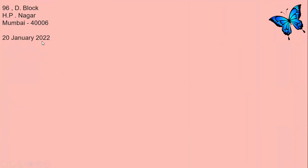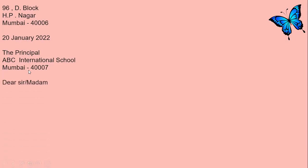The date is 20 January 2022. If you write 'January 20,' then you need a comma before 2022 to differentiate the date and year; otherwise, this format works without a comma. Then follows the receiver's address — you are writing to the principal of ABC International School, Mumbai. Then the salutation: 'Dear Sir or Madam,' and you may put a comma here.